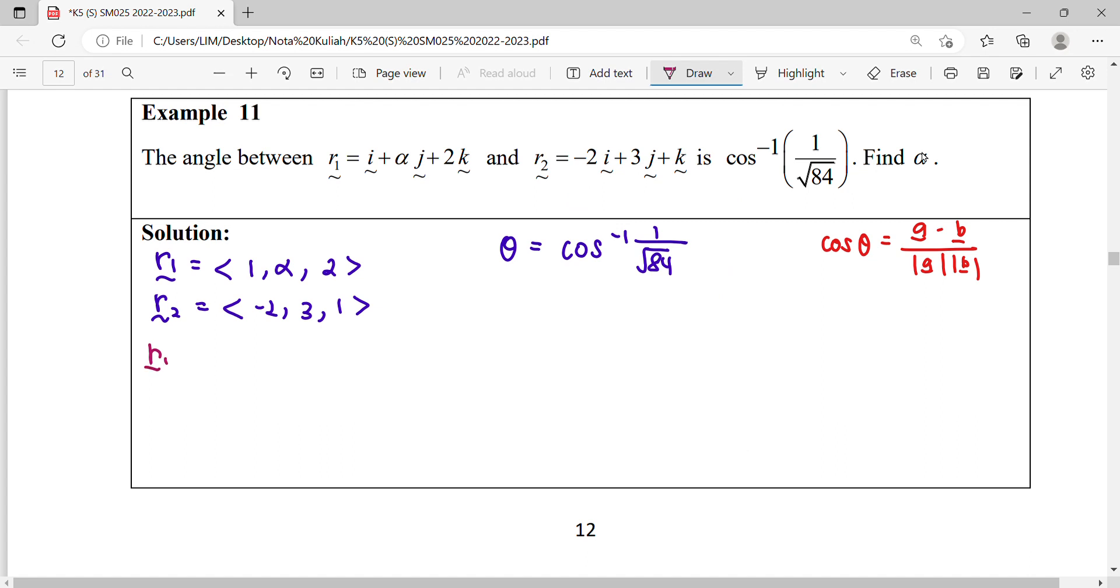r1 dot r2. Then we give r1. One square alpha square, two square. Magnitude r2.